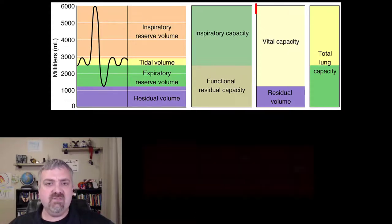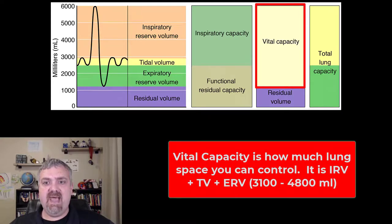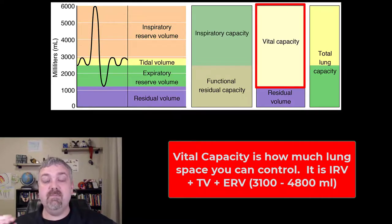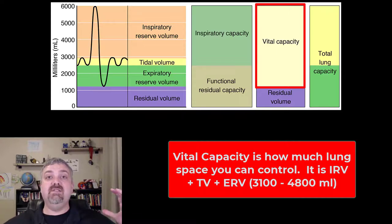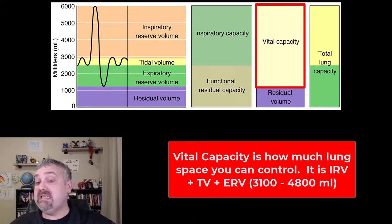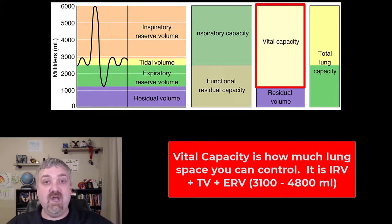The next really important one is the vital capacity. The vital capacity is how much lung you can control and use. It would be your inspiratory reserve volume plus your tidal volume plus your expiratory reserve volume. Imagine sucking as much air into your lungs as you can and then blowing all of it out, like blowing up a huge balloon — that is the lung volume you can control. That is called the vital capacity, and it is generally going to be between 3,100 and 4,800 milliliters. The residual volume is the part of the lung you can't control.